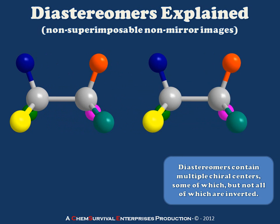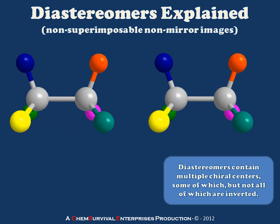Let's duplicate this molecule. But this time, instead of inverting both chiral centers, I'm only going to invert one chiral center — the one on the left. Notice now that the blue and green substituents have been interchanged, but the chiral center on the right side of the molecule is unchanged.